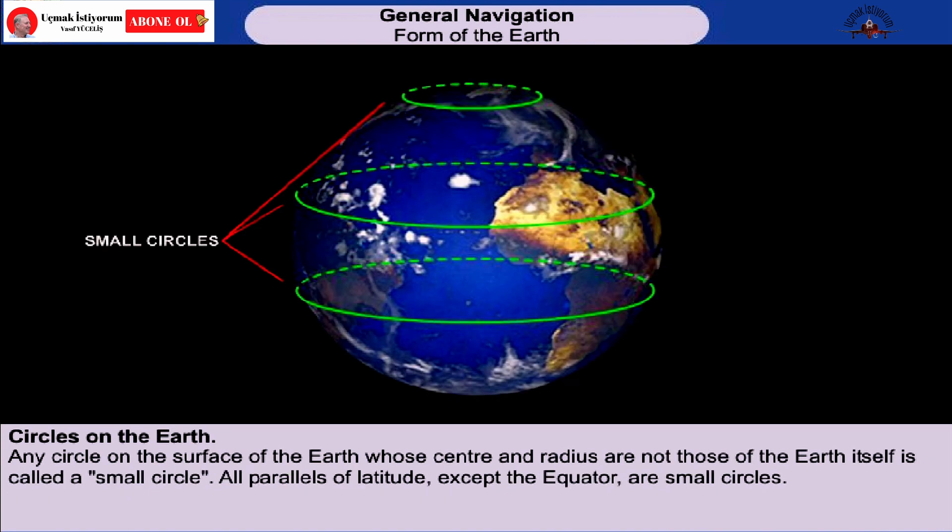A circle on the surface of the Earth, whose center and radius are not those of the Earth, is called a small circle. The main small circles of relevance to position are the parallels of latitude.